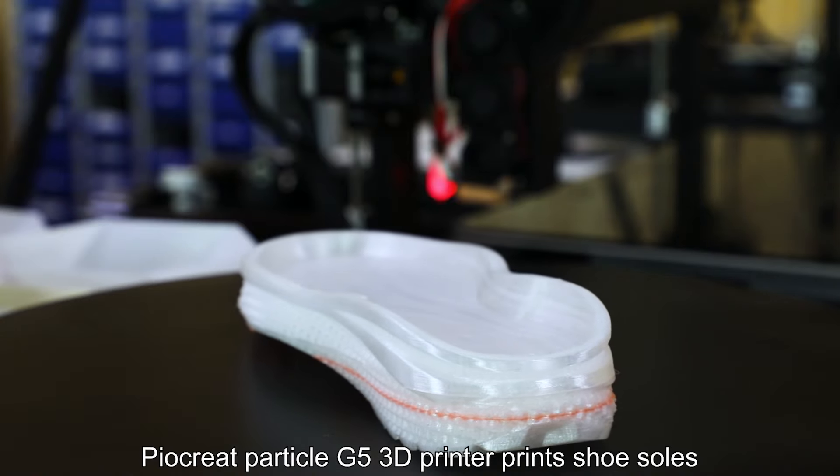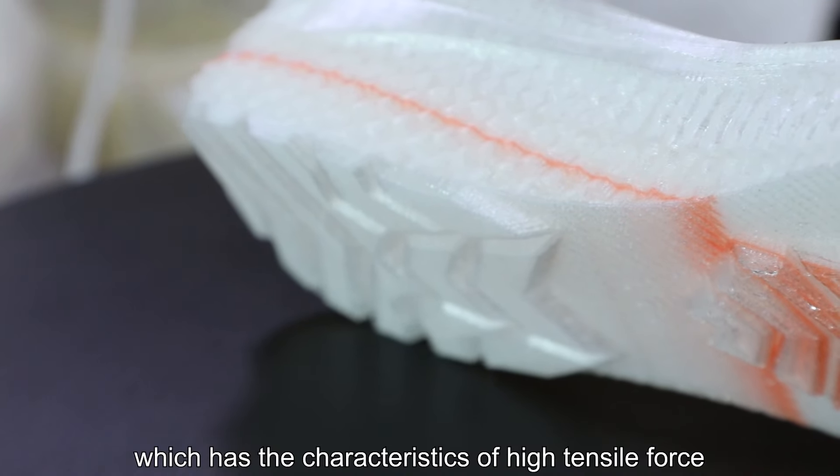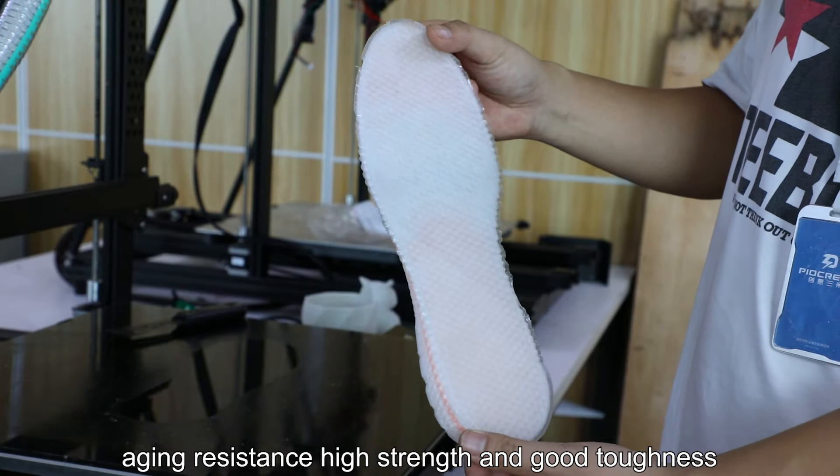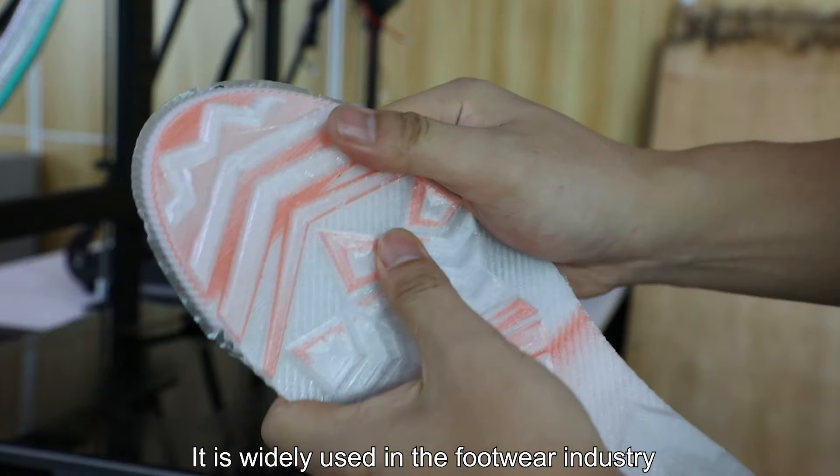The Pyrocrate Particle G5 3D Printer prints shoe soles using TPU material, which has characteristics of high tensile force, aging resistance, high strength, and good toughness. It is widely used in the footwear industry.